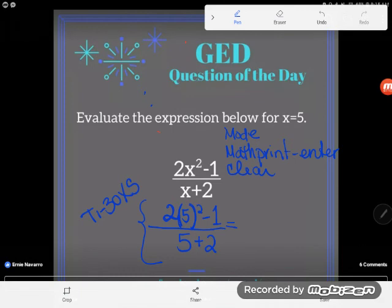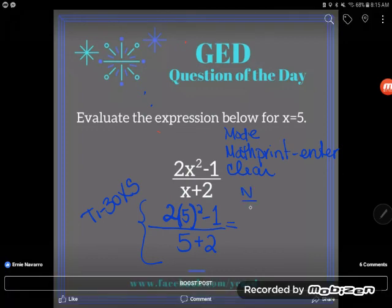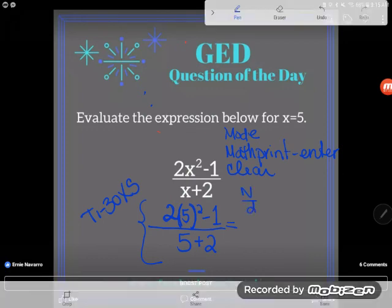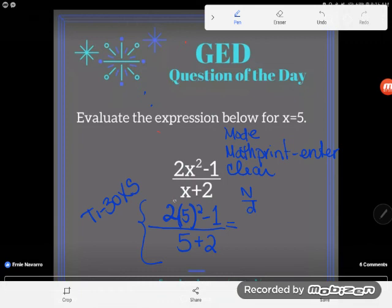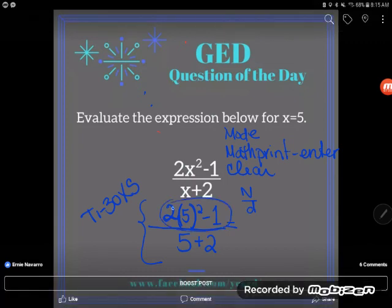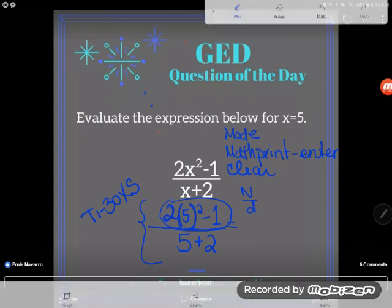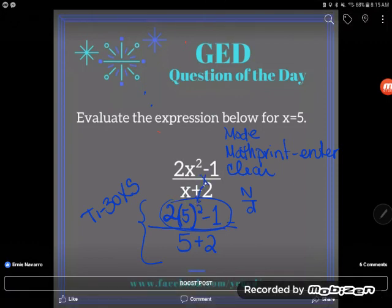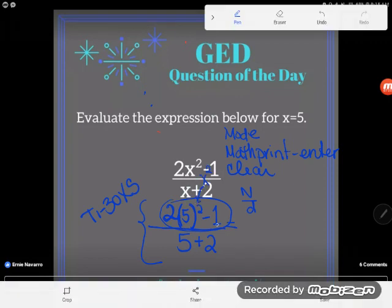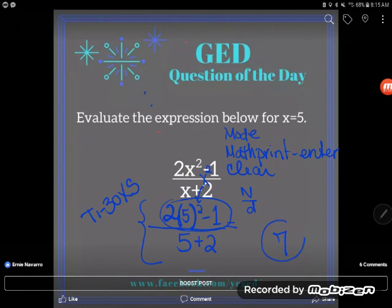And now you can type this entire expression into your calculator. First thing I would want to do is get my fraction bar going, so I would press the n over d button. N over d will get that fraction. And now you can type that entire expression up top, parentheses and all: 2, open parentheses, 5, close parentheses, squared - remember that's the x² button - minus 1. And then you arrow down to go down here and put 5 + 2. And if you type it all into your calculator correctly, you will still get that answer of 7.